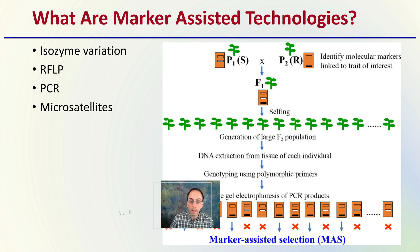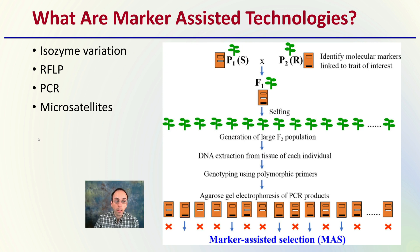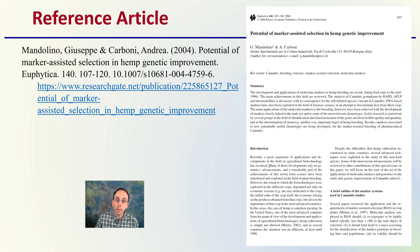So what are marker-assisted technologies? There are a couple I'll be covering: isozyme variation, RFLP, PCR, and microsatellites. I'll be providing at least a brief overview of each within this video lecture. It's always good to cite your sources, and we see here a reference article that you're welcome to go through — a direct link is provided if you want to learn even more information than what's presented here.